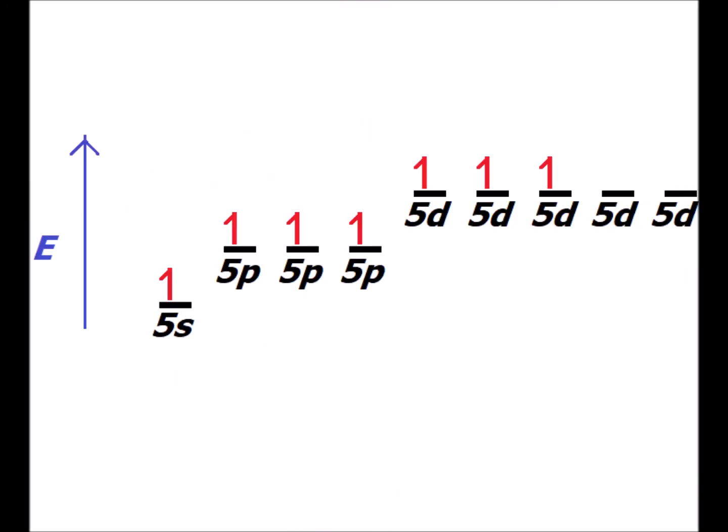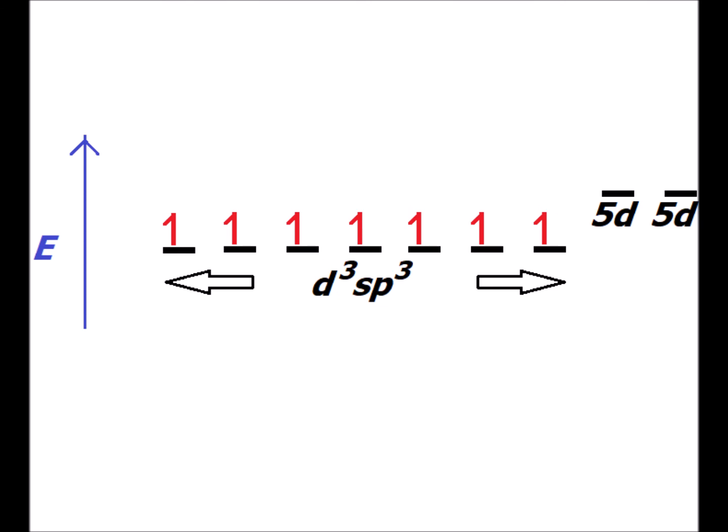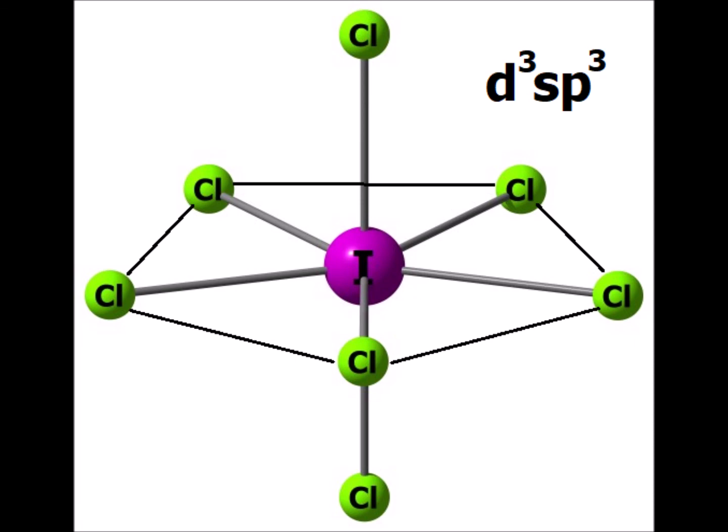Suppose a third electron on iodine — the 5s electron — is promoted to a formerly empty 5d orbital. Now we see through valence bond theory a rationale for iodine being able to form seven covalent bonds. If all seven of these half-filled atomic orbitals hybridize, we get seven iso-energetic d³sp³ hybrids. An example of such hybridization on iodine is iodine heptafluoride, which has a pentagonal bipyramidal structure.